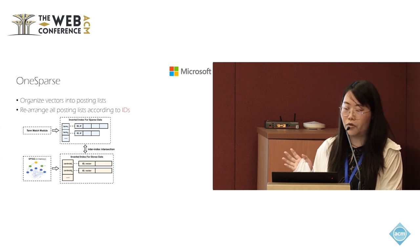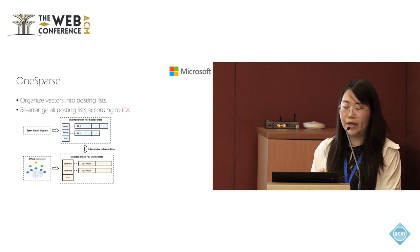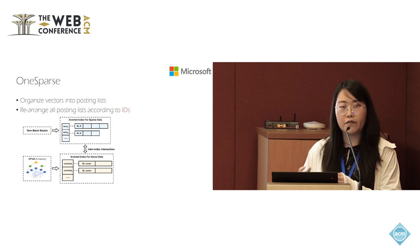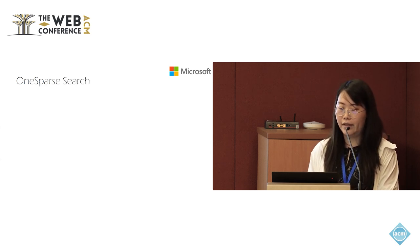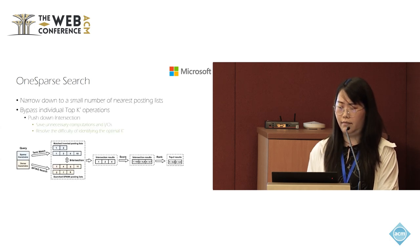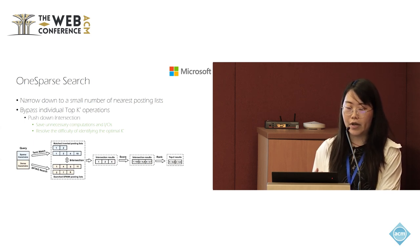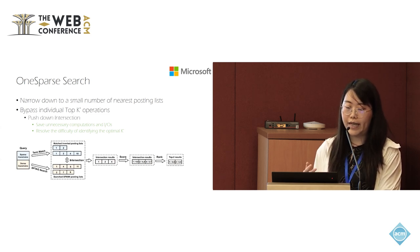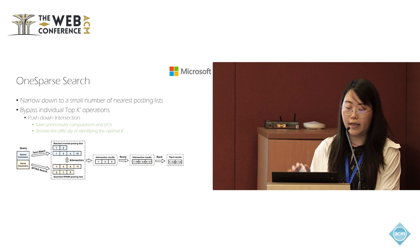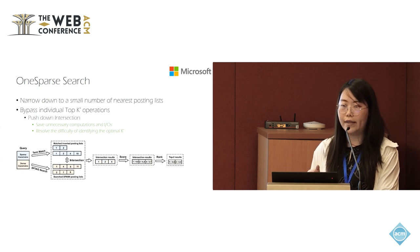We organized vectors into posting lists and rearranged all posting lists according to document IDs instead of distance to the centroid. During search, it first narrows down to a small number of nearest posting lists. During fine-grained traversal, since each posting list is ordered by IDs, when one index scans to a certain ID, score calculations for candidates with smaller IDs in other indexes can be skipped. This solves the difficulty of identifying whether a result returned from one index during join traversal can be skipped.